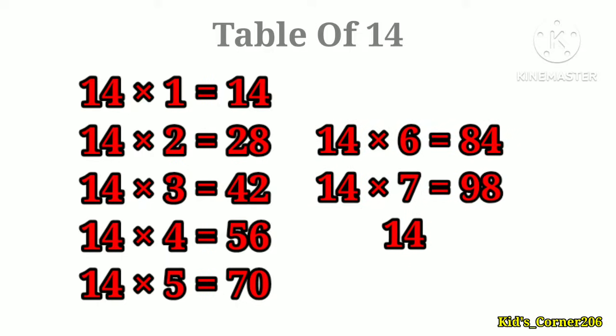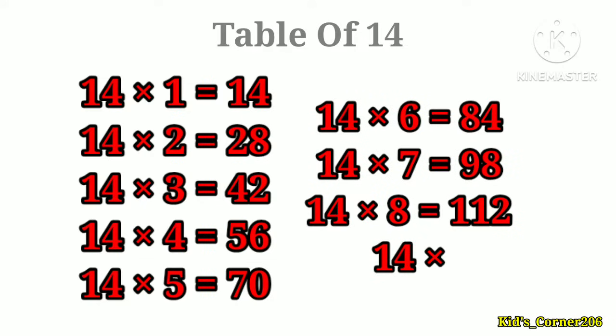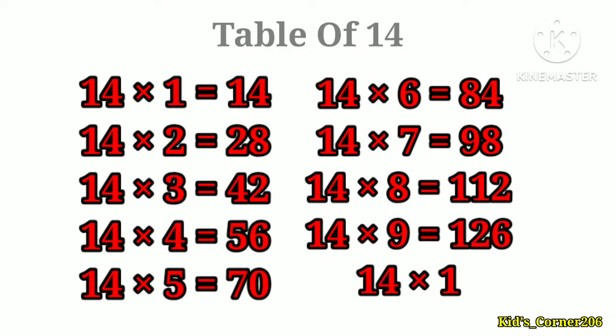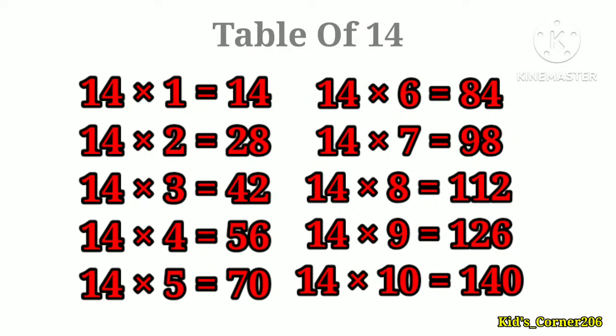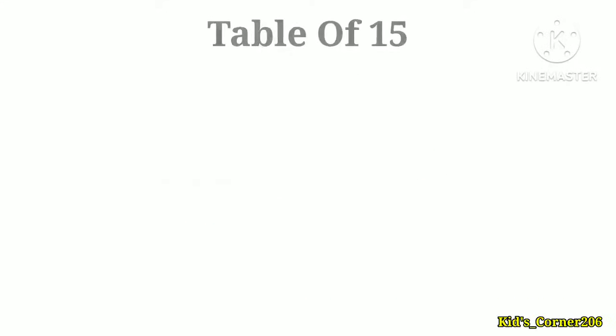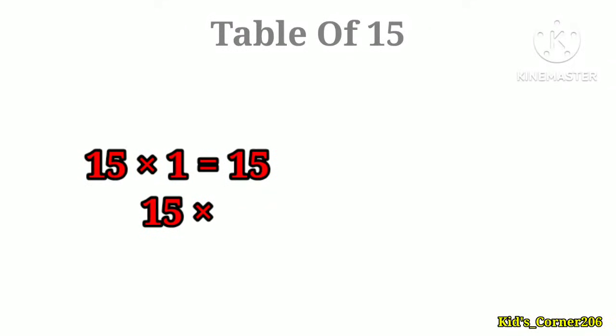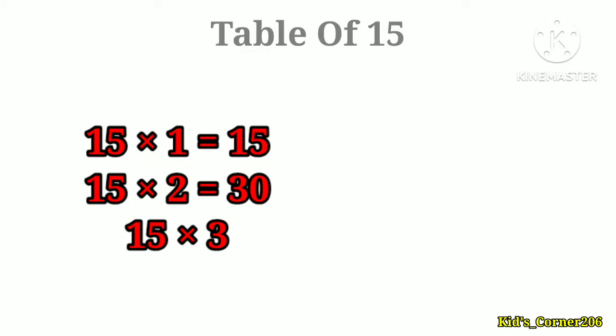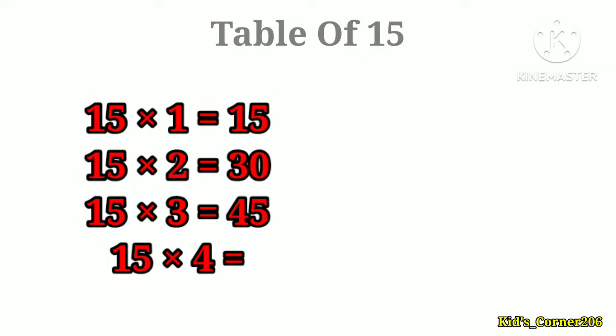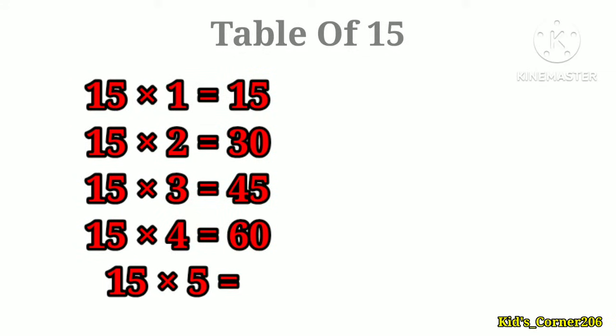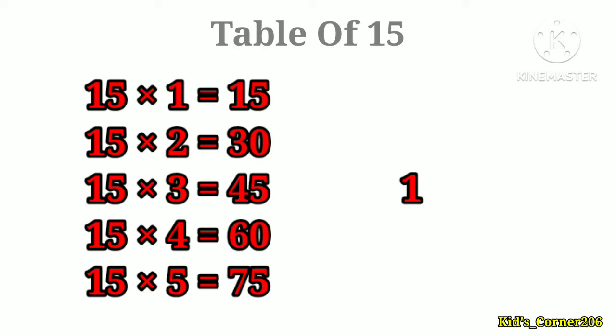Table of 15. 15 ones are 15, 15 twos are 30, 15 threes are 45, 15 fours are 60, 15 fives are 75.